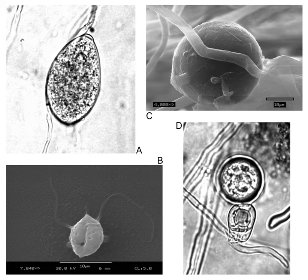Oomycota means "egg fungi," referring to the large round oogonia — structures containing the female gametes — that are characteristic of the oomycetes. The name "water mold" refers to their earlier classification as fungi and their preference for conditions of high humidity and running surface water, which is characteristic of the basal taxa of the oomycetes.